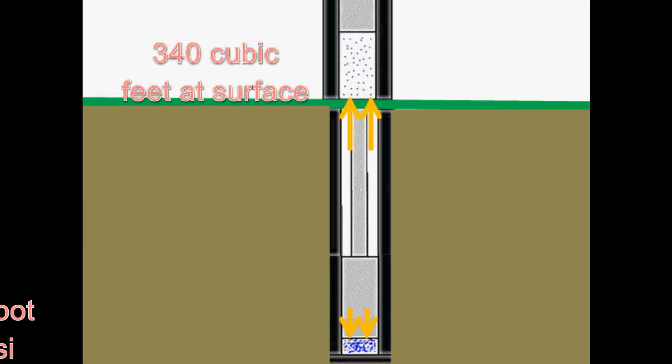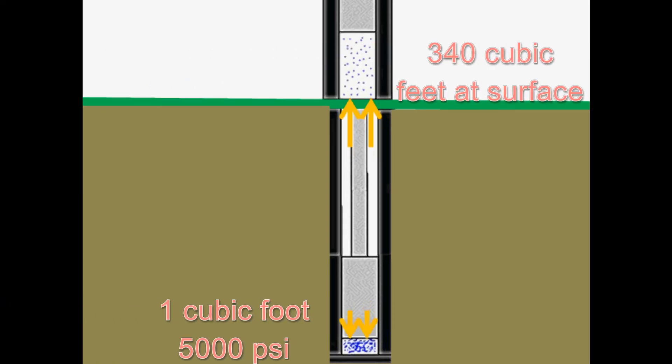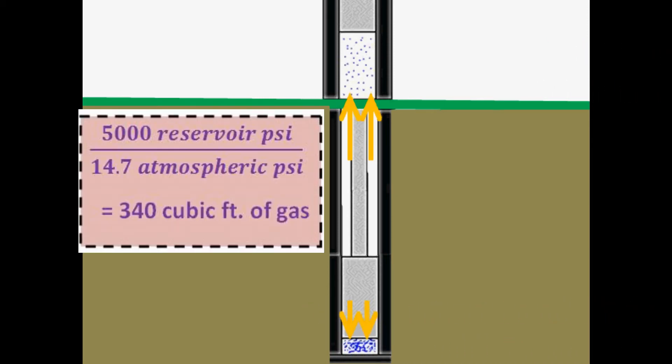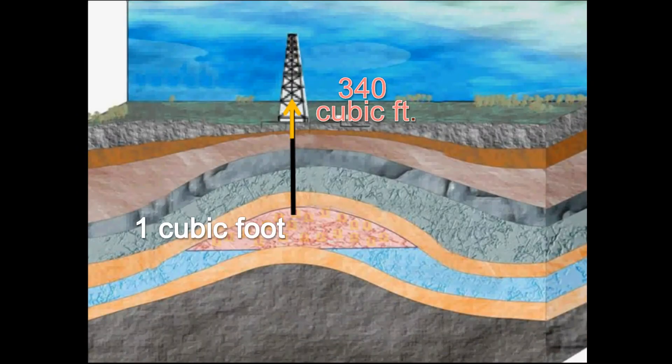For example, one cubic foot of gas volume at 5,000 psi in the reservoir would expand to 340 cubic feet at the surface. We know this because we can divide 5,000 reservoir psi by 14.7 atmospheric psi to arrive at 340 cubic feet at the surface.